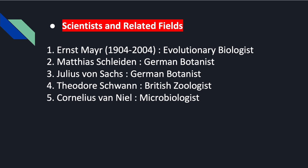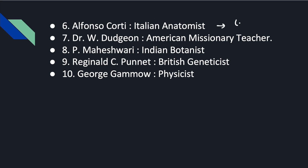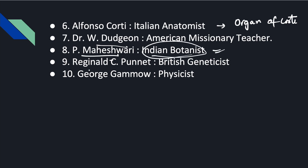Starting with scientists and their related fields. He is also a German botanist. Swan is a British zoologist who also contributed to cell theory, which we study in the cell chapter. Vaughan Neal is a microbiologist and also an Italian anatomist associated with the Organ of Corti. Dr. Dajion is an American missionary teacher. There is also an Indian botanist.